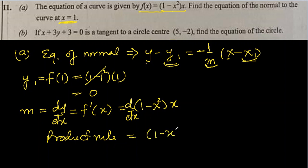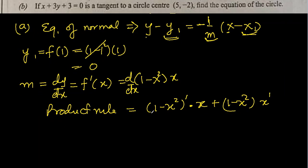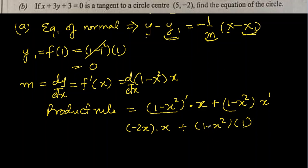Using the product rule: differentiate the first factor, keep the second unchanged, plus keep the first unchanged and differentiate the second. So the differentiation of 1 minus x squared is minus 2x, times x, plus 1 minus x squared remains the same and the differentiation of x is 1. This gives minus 2x squared plus 1 minus x squared.